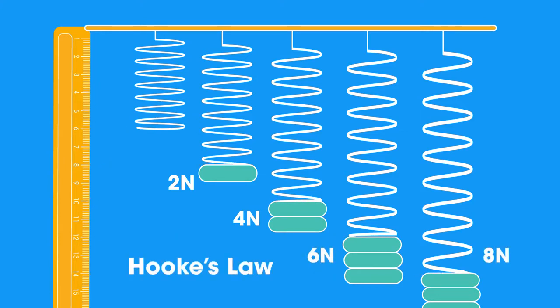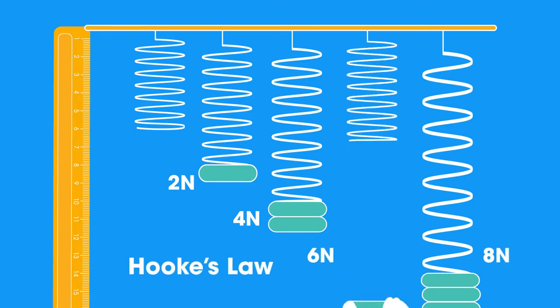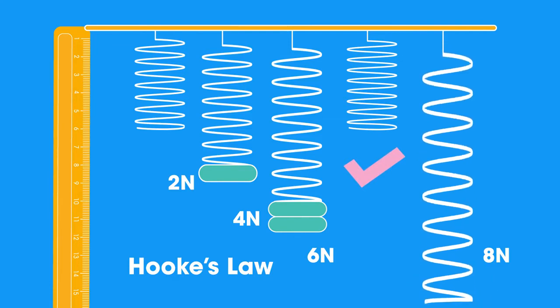Hooke's law states the extension is directly proportional to the force applied, provided that the elastic limit is not exceeded. At the elastic limit, the spring becomes overstretched and won't return to its original state.